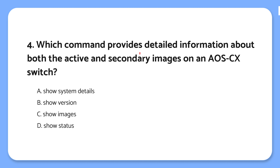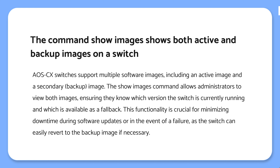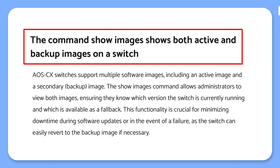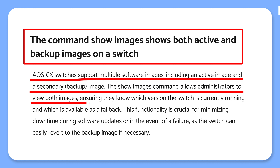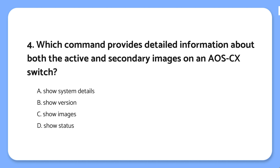Question 4: Which command provides detailed information about both the active and secondary images on an AOS-CX switch? The knowledge point is that the command 'show images' shows both the active and backup images on a switch. The 'show images' command shows both the running software and the backup version on the switch. The correct answer is: the 'show images' command lets you see both the active and backup software images running on your switch, so you know what's currently installed and what's available as a fallback.